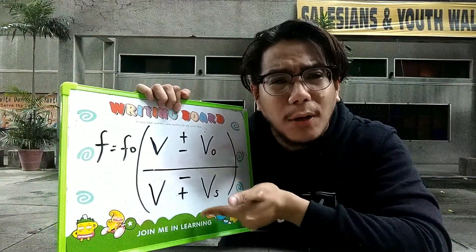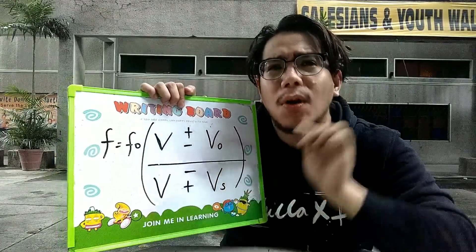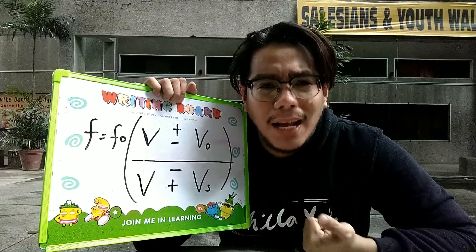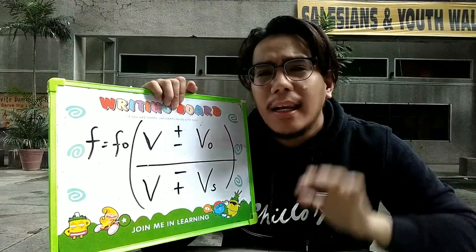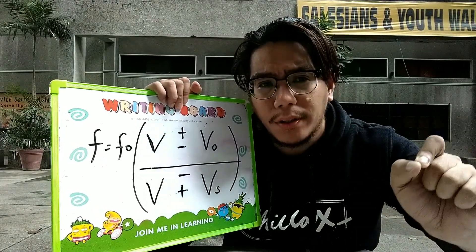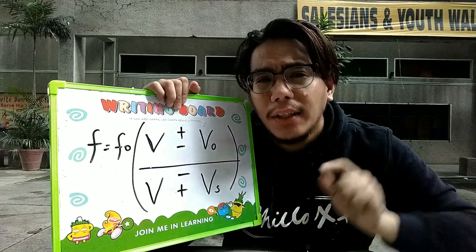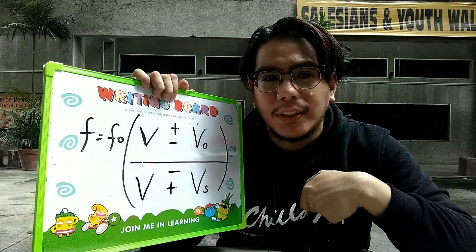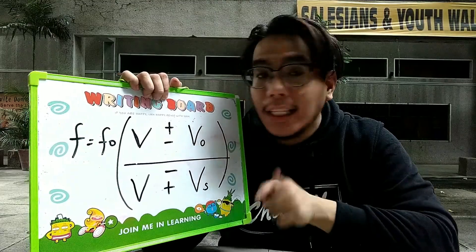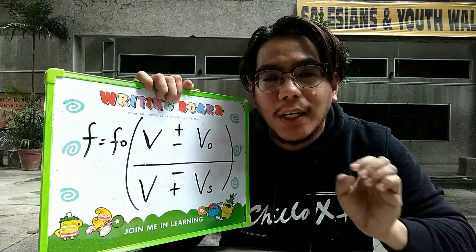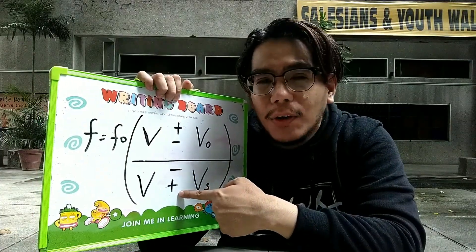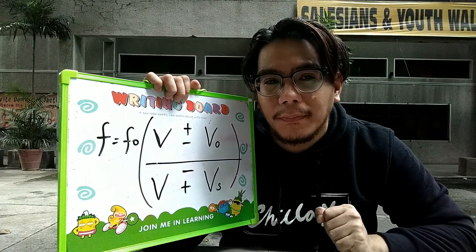Ano ngayon kung alam na natin yung symbols — plus, minus, minus, plus? Tatandaan natin, itong mga symbols na ito determines the movement of the listener or the source. Ito na ang million dollar question: ano nga ba ang silbi ng plus, minus, at minus, plus? Ibig sabihin lang, lahat ng upper sign determines that the object is going towards. And lahat ng nasa lower sign determines that the object is going away. So, lahat ng upper sign — katulad sa numerator ang plus, at sa denominator ay yung minus — symbolizes that the object is moving forward. And for the lower sign — sa numerator yung minus, and sa denominator yung plus — symbolizes that the object is going away.